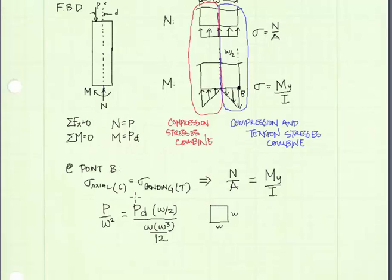Now substituting values into our equation here, our normal force is equal to P, and the area is the area of our cross-section, which is a square, has a side length w. And so the area is w squared. And the moment we found to be P times d. y is the distance from the neutral axis to the point we're evaluating stress, which is here at point B. That distance from the neutral axis, where the stress is zero, to point B is half the width, w over 2.